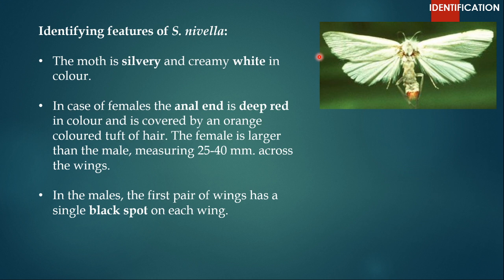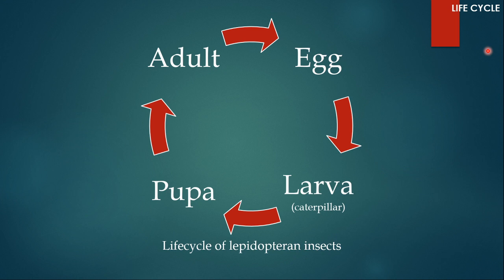In any Lepidopteran insect you would find four stages: the adult stage, the egg stage, the larva or caterpillar stage, and the pupa stage. The male and female mate, the female lays eggs, the eggs hatch into larvae, the larvae pupate after going through a few molts, and then the pupa emerges as an adult. Let's apply this scheme to Scyrpophaga nivella.